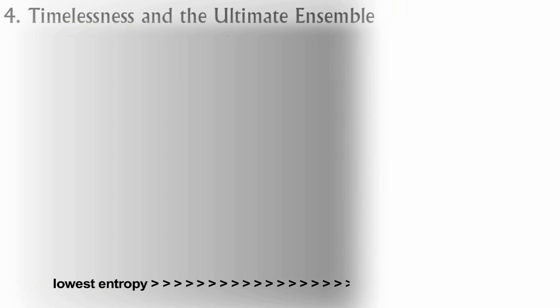4. Timelessness and the Ultimate Ensemble. If the universe had the least amount of entropy at its beginning, and Schrodinger described life as a unique process which creates negative entropy, does that mean that in a sense he thought the universe was the most alive back at its beginning?